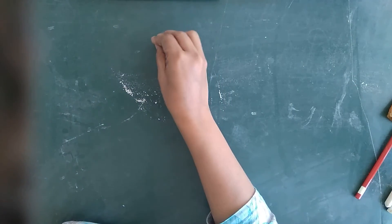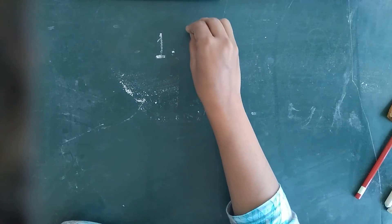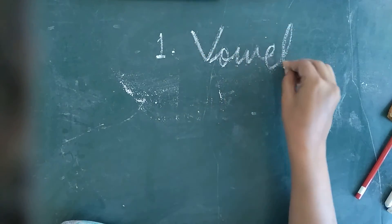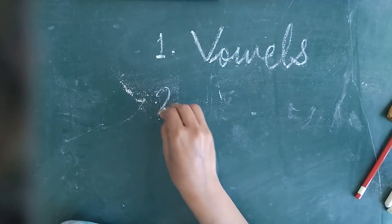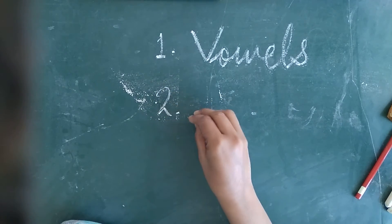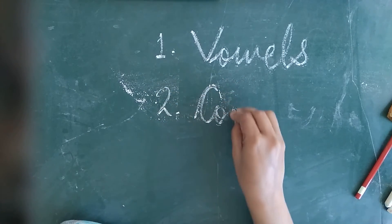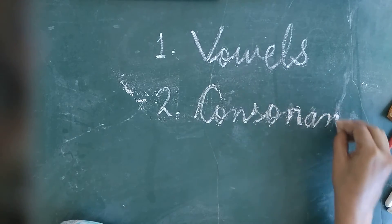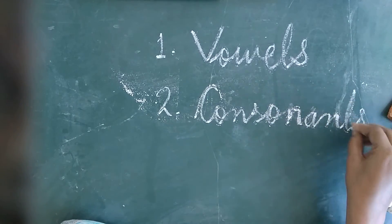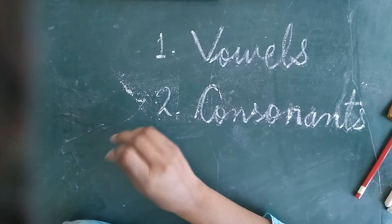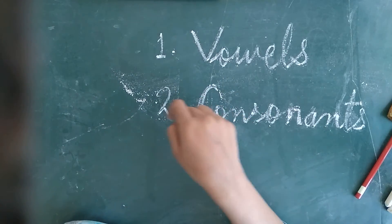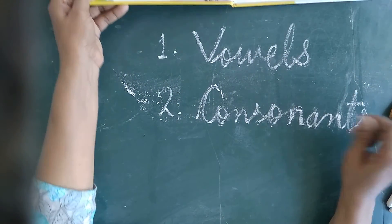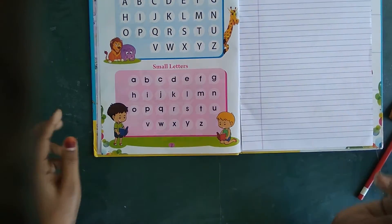The first part is vowels. The second part is consonants.